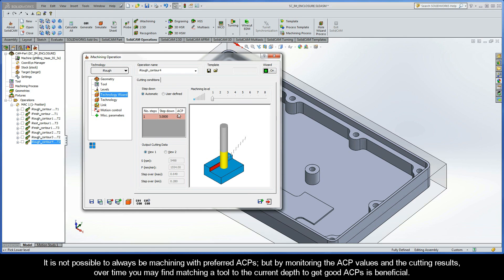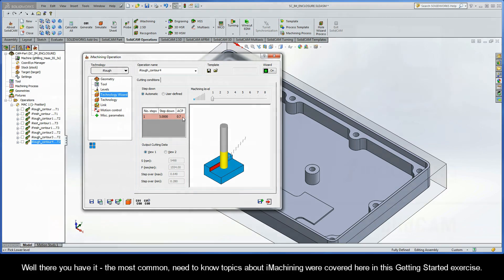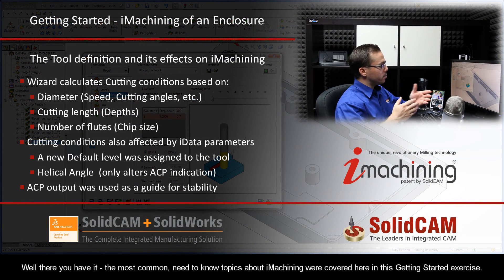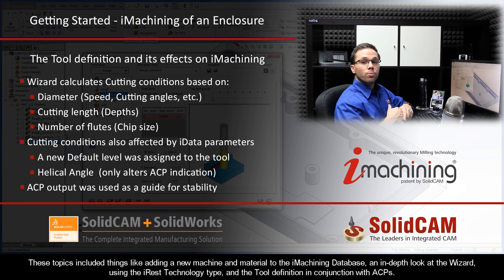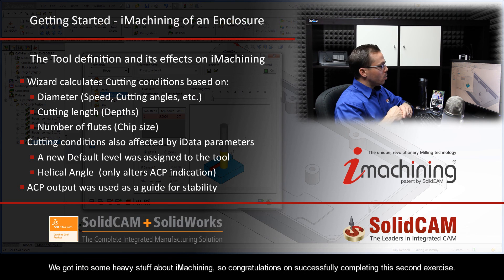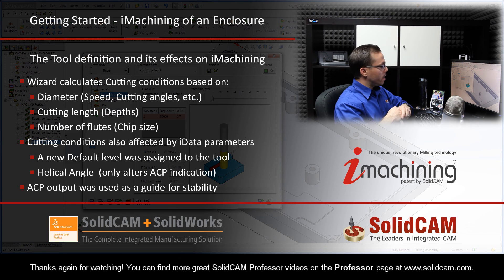Now, it's just not possible to always be machining with preferred ACPs, but by monitoring the ACP values and the cutting results, over time you may find that matching a tool to the current depth to get good ACPs is beneficial. Well, there you have it. The most common need-to-know topics about iMachining were covered here in this Getting Started exercise — including adding a new machine and material to the iMachining database, an in-depth look at the wizard, using the iREST technology type, and the tool definition in conjunction with ACPs. Congratulations on successfully completing your second exercise. Thanks for watching — you can find more great SolidCAM Professor videos on the professor page at www.solidcam.com.